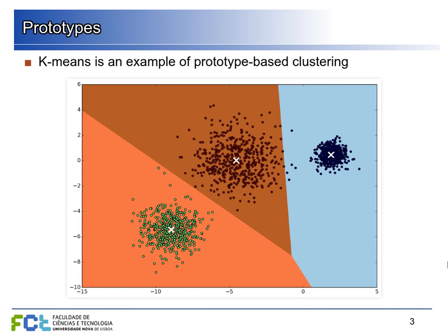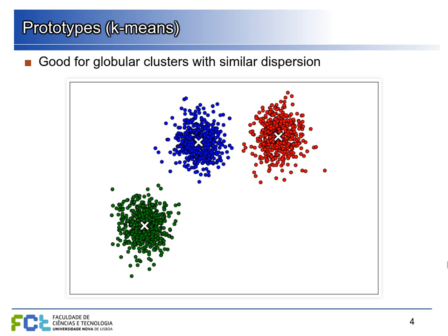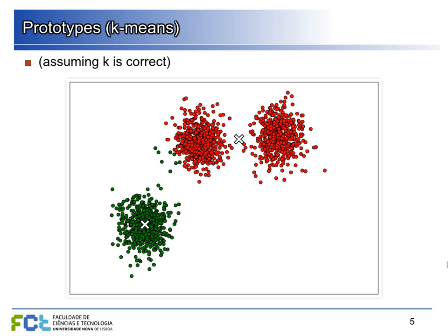Let's see one problem with prototypes. Prototype-based clustering essentially involves choosing one point — which may or may not belong to our dataset — to be a prototype for the cluster, determining what the cluster is like. K-means is an example, where the prototypes are the centroids. This works well for globular clusters with similar dispersion if we correctly specify how many clusters there are. Using K-means with K=3 on an appropriate dataset works fine, but using K=2 doesn't make much sense. Specifying the K value is one key problem.